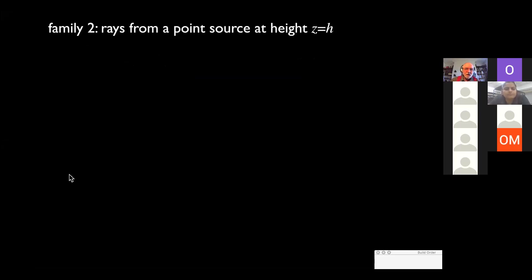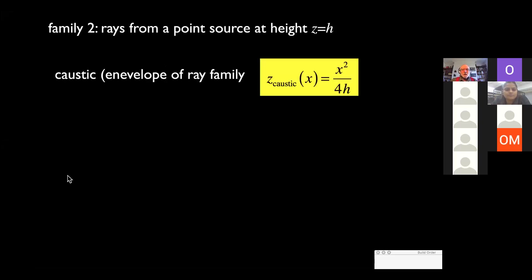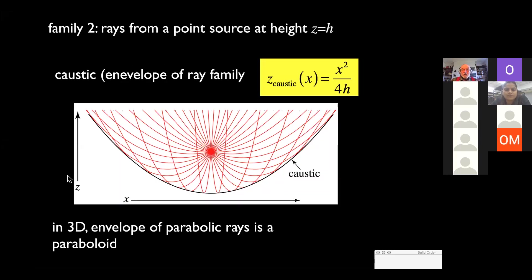Or, more realistically, rays from a point source, that's part of the object not too far away, a car or a tree or whatever you're looking at, mirage reflected, at some height. You can calculate the caustic. It's again a parabola. Each of the parabolic rays envelops a parabola.